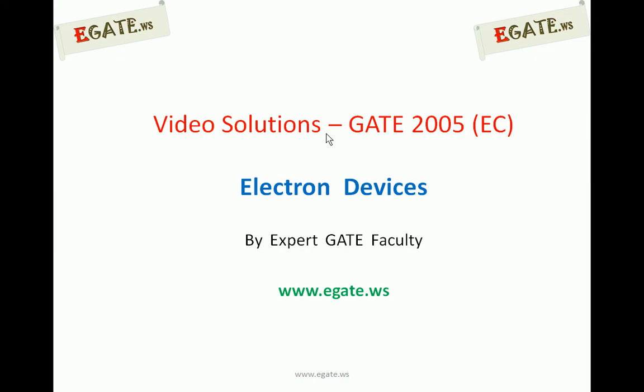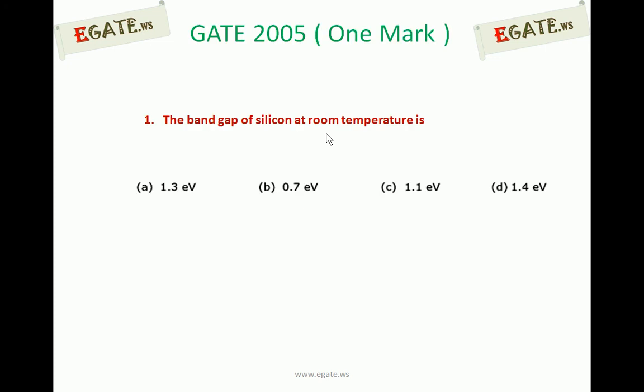Hello, good morning. We are discussing solutions for GATE 2005 EC paper. The topic is electron devices. This is one more question given in 2005: The band gap of silicon at room temperature is: (a) 1.3 eV, (b) 0.7 eV, (c) 1.1 eV, (d) 1.4 eV.